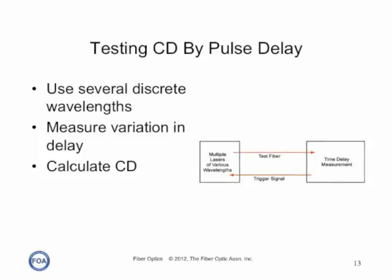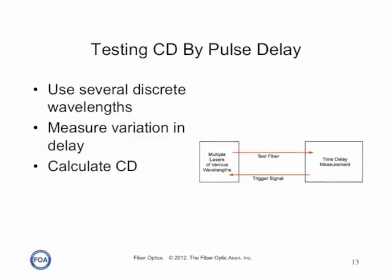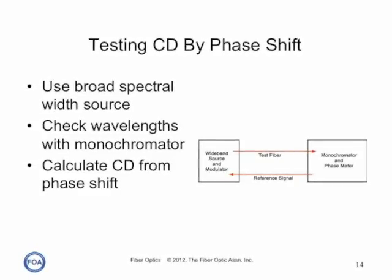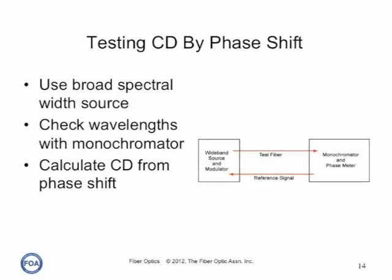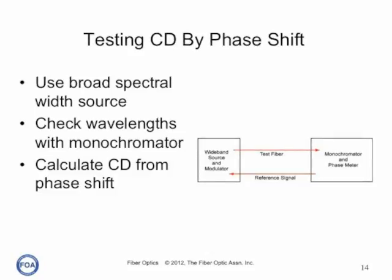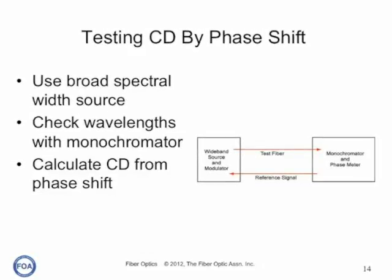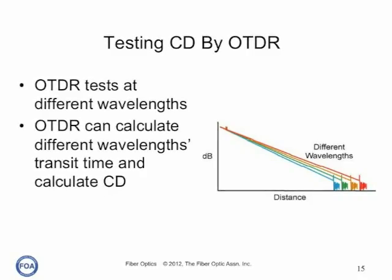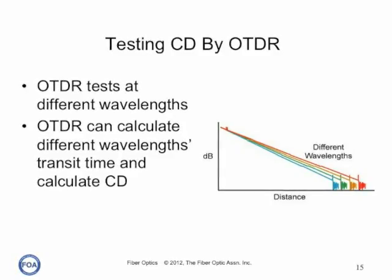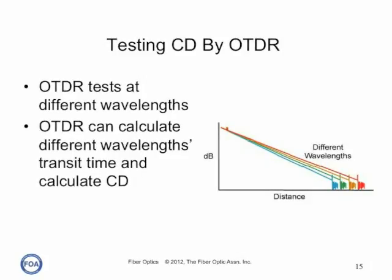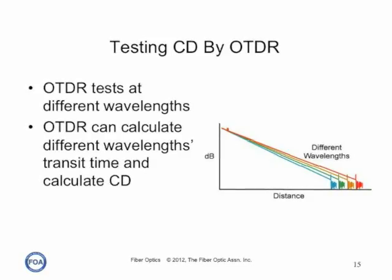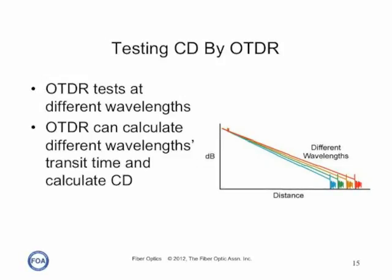The method shown here tests chromatic dispersion by measuring the relative delay in the fiber for different discrete wavelengths. Another way to test chromatic dispersion is to use a broad spectral width source and a monochrometer to check at various wavelengths — it can calculate phase shifts from the varying wavelength and calculate the fiber's chromatic dispersion. A common fiber optic test instrument, the OTDR, measures transit times in a fiber and uses the index of refraction to calculate distance. If one tests with an OTDR at different wavelengths and calculates the difference in transit times, it can also calculate chromatic dispersion.